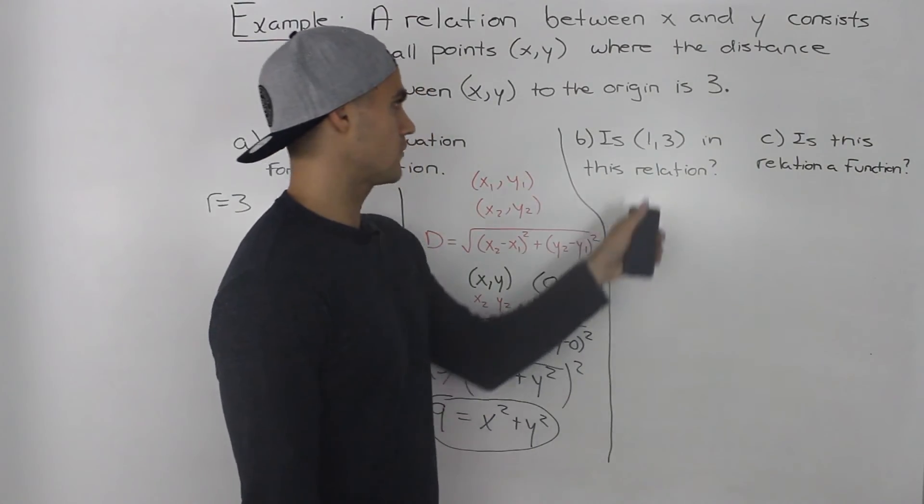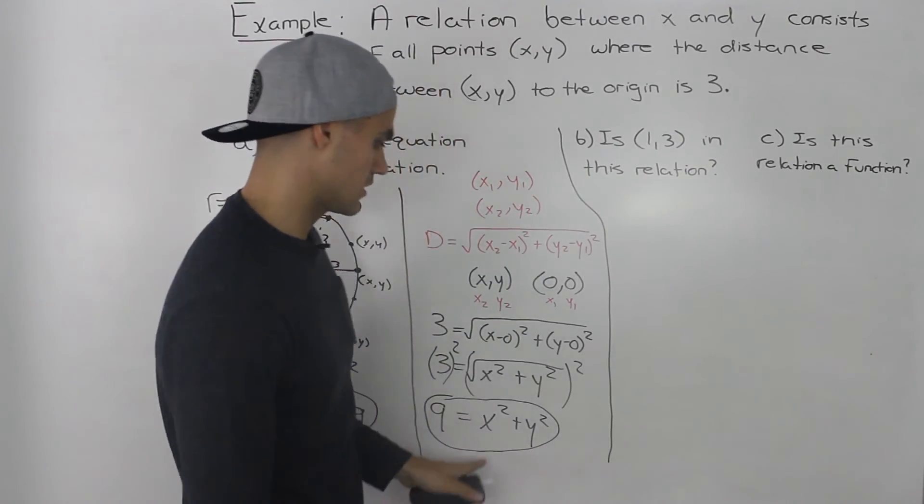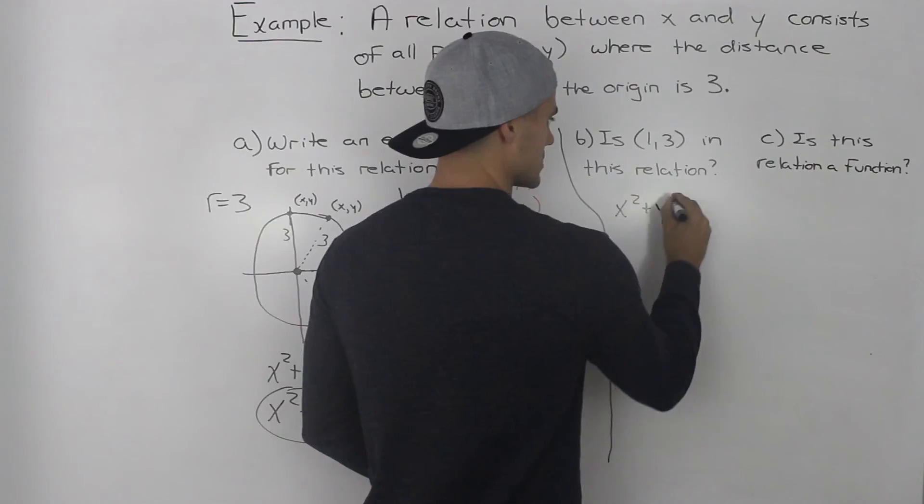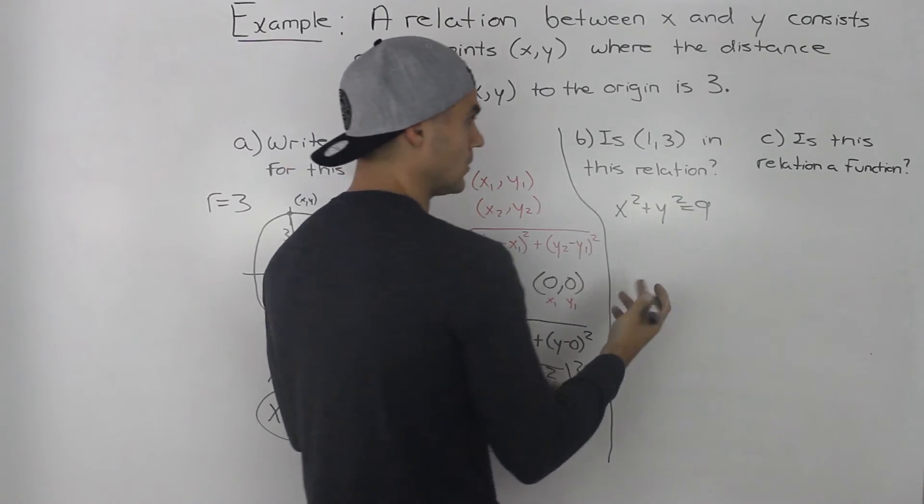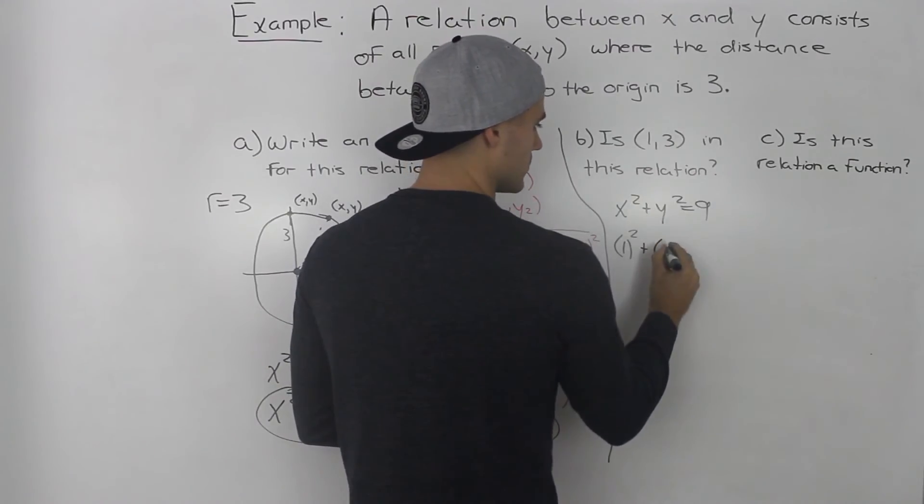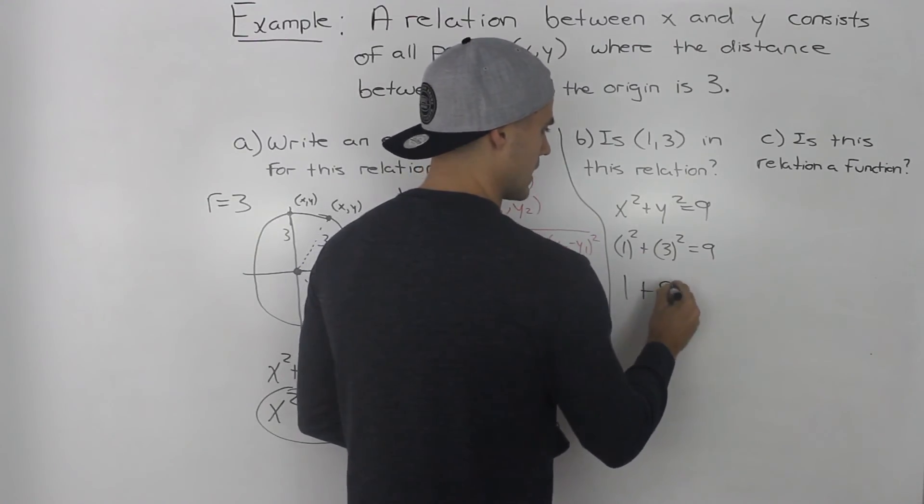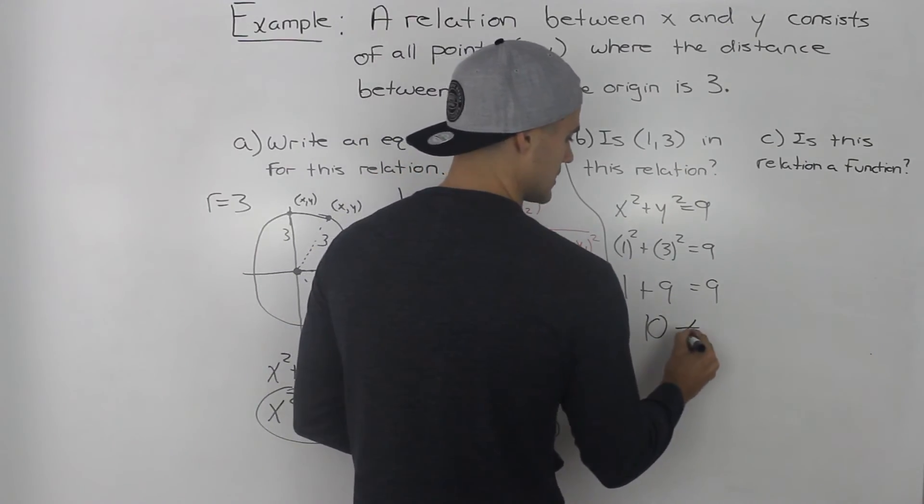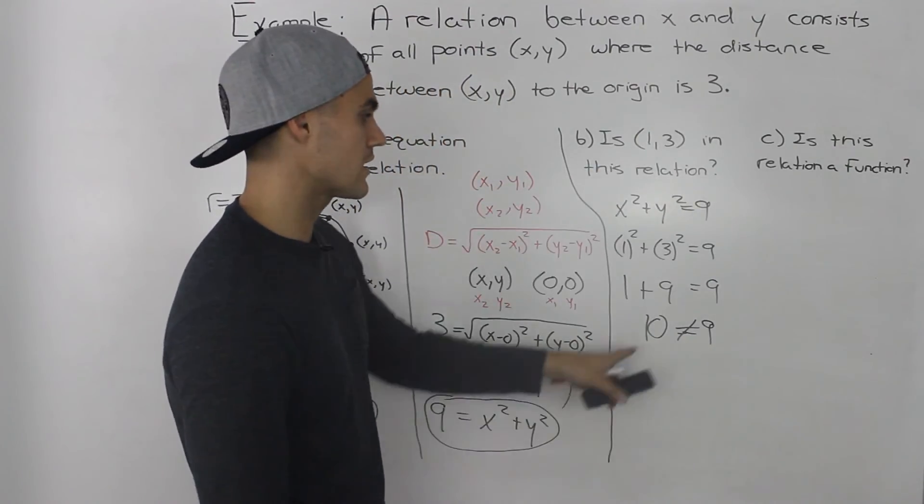Moving on to part b, we have to find whether the coordinate (1, 3) is in this relation. And the way we can do that is using the equation that we got in part a. So the equation we got was x² + y² = 9. And all we have to do is sub in 1 and 3 for x and y and make sure that this relation holds. So subbing in 1 for x, we get 1² + 3² = 9. 1² is 1, 3² is 9, and then notice on the left side we get 10, and that does not equal 9. So this coordinate (1, 3) is not in this relation.